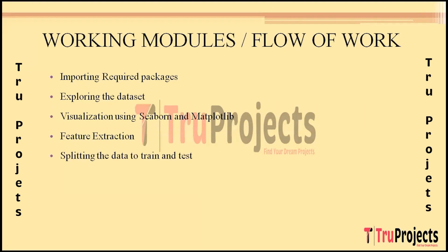The next step is splitting the data into train and test sets. The dataset is divided into two subsets — one for training the model and another for testing its performance. This separation ensures an unbiased evaluation of the model's accuracy. The models are then trained using the extracted features and corresponding labels, using Support Vector Classifier and Random Forest algorithms to learn patterns and create a predictive model capable of accurately classifying URLs as phishing or legitimate.